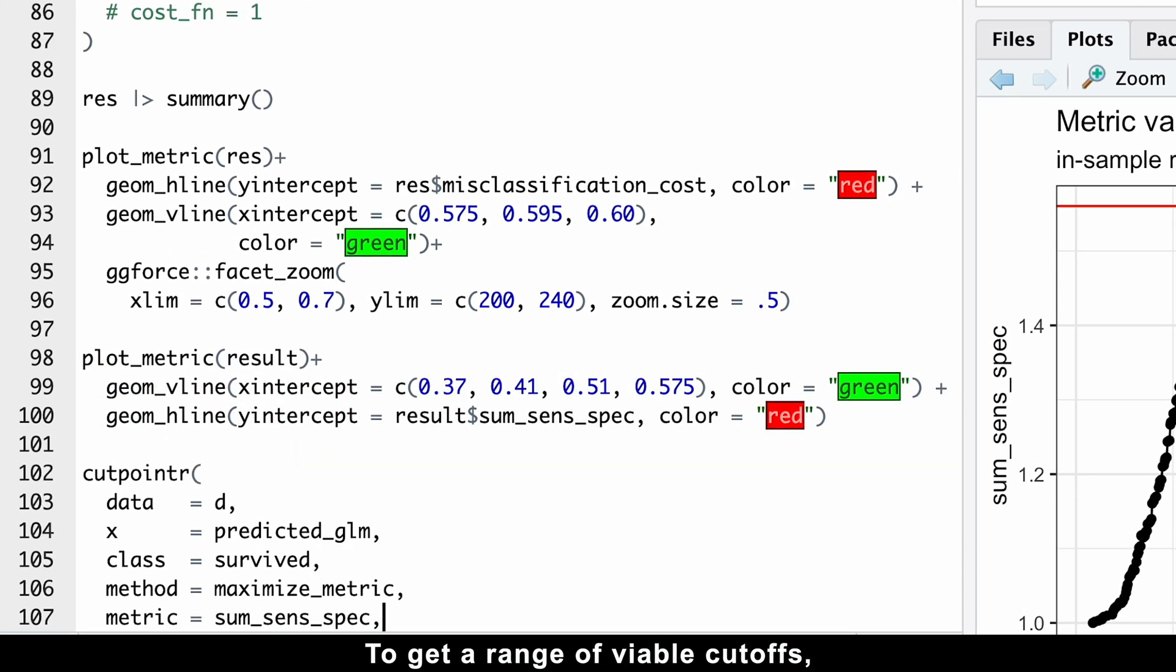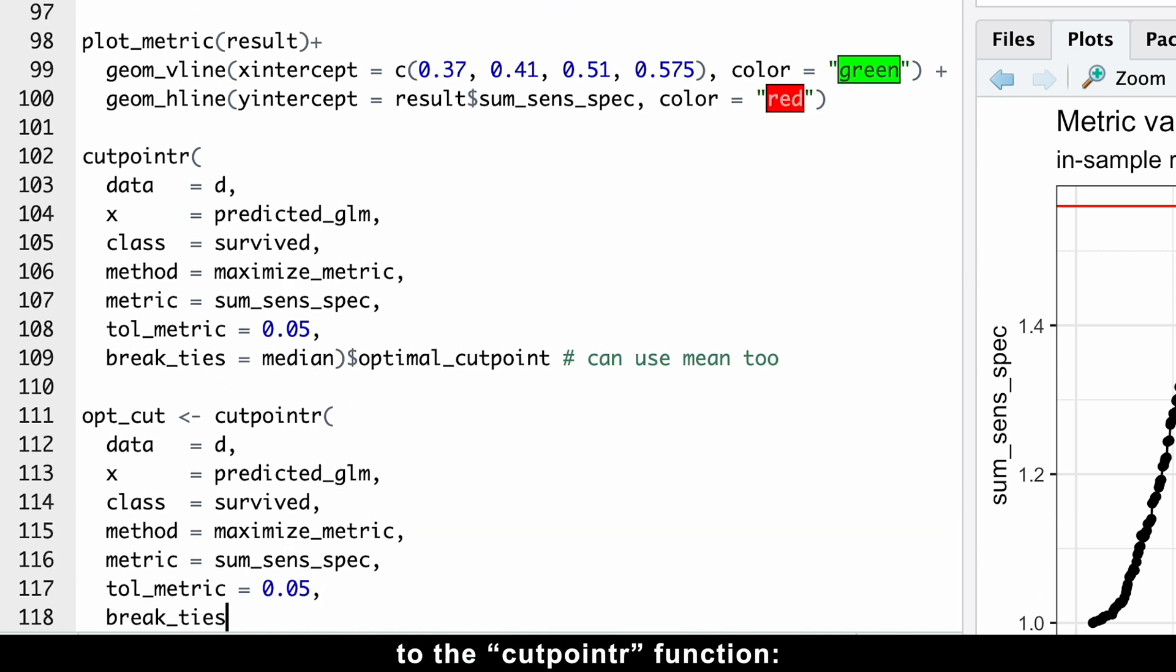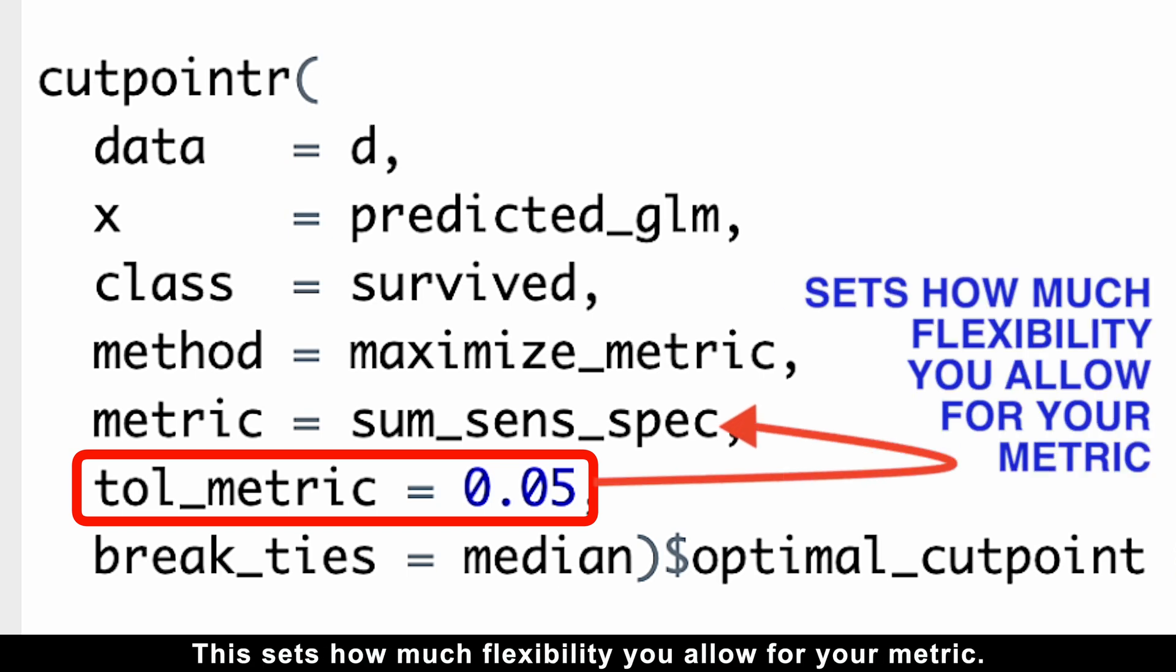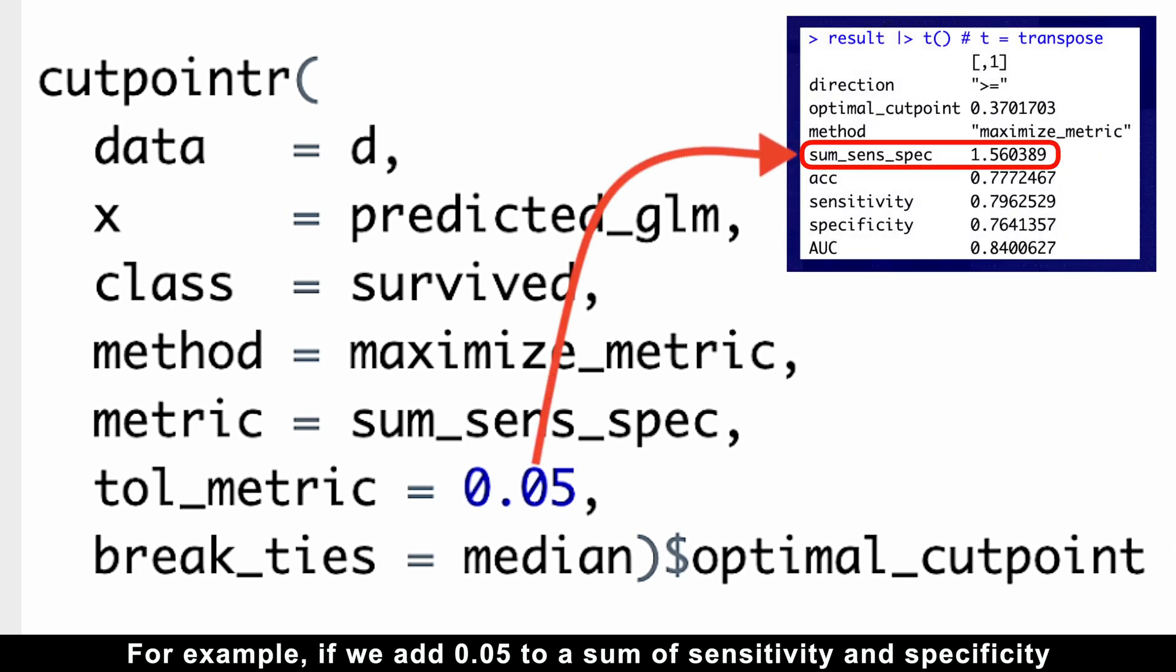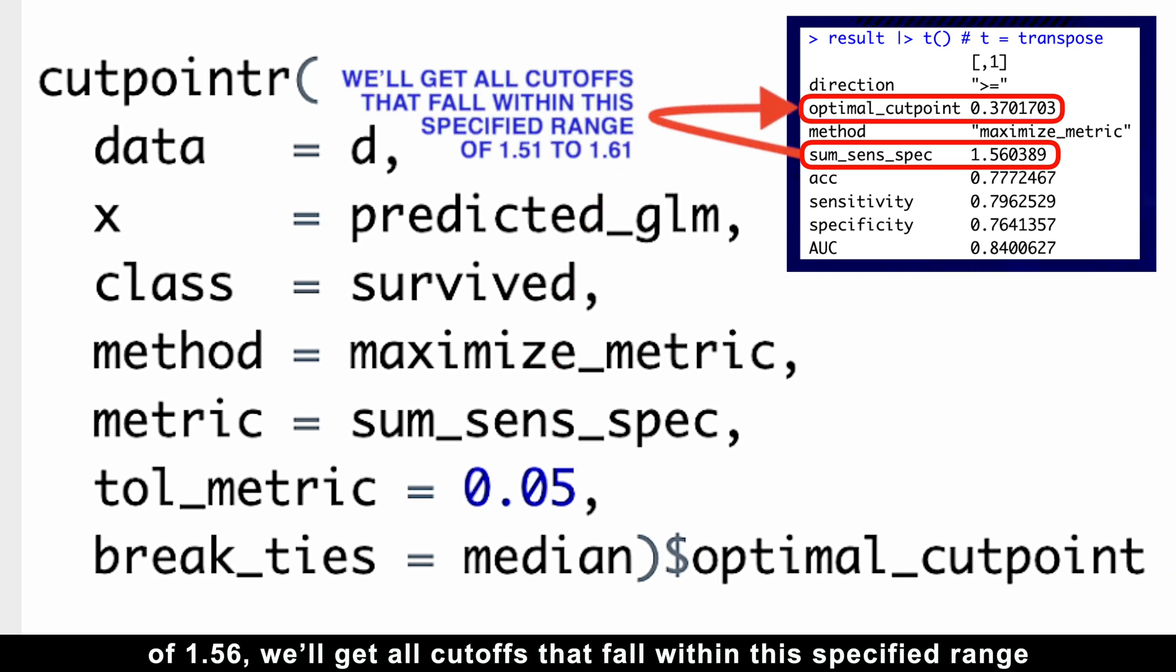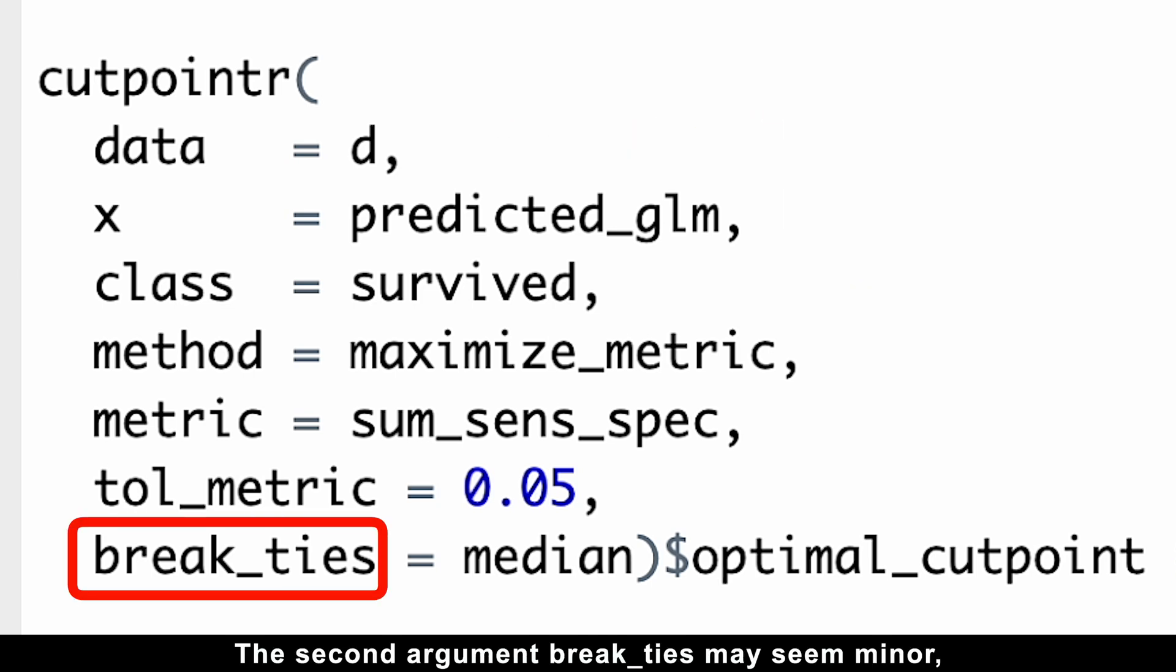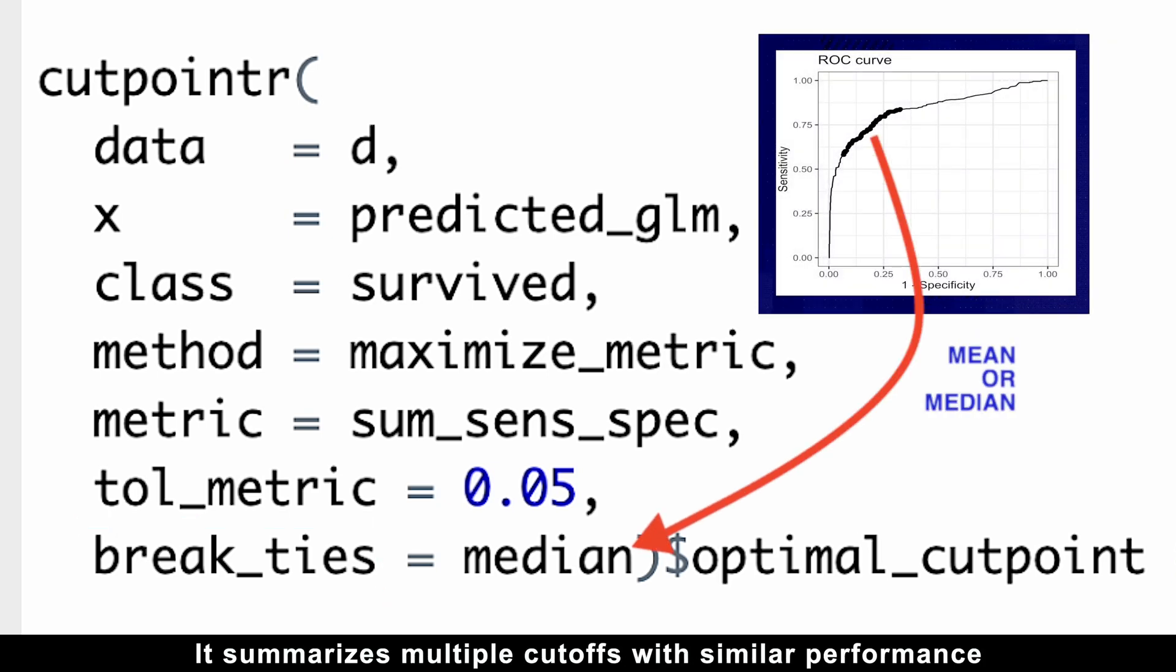Here's how it works. To get a range of viable cutoffs, you just need to add two more arguments to the cutpointr function. The first one is the tolerance for our metric. This sets how much flexibility you allow for your metric. For example, if we add 0.05 to a sum of sensitivity and specificity of 1.56, we'll get all cutoffs that fall within this specified range of 1.51 to 1.61. The second argument, break ties, may seem minor, but it's a game-changer. It summarizes multiple cutoffs with similar performance into a single, more reliable value, like the mean or median.